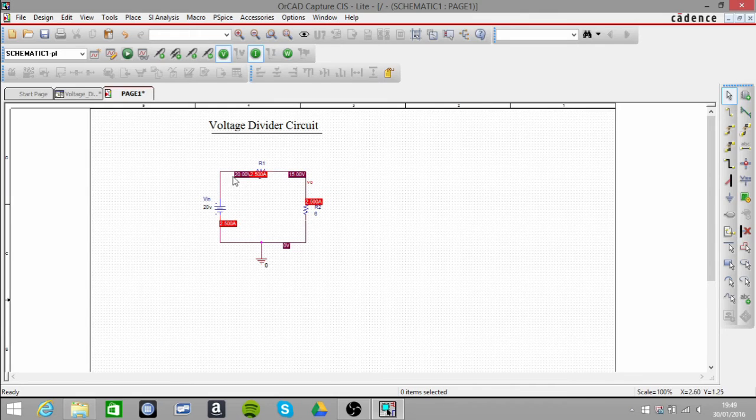Our current is therefore going to be 2.5 amps throughout our circuit. So that corresponds with the results that we got earlier. So that confirms it. Thank you.